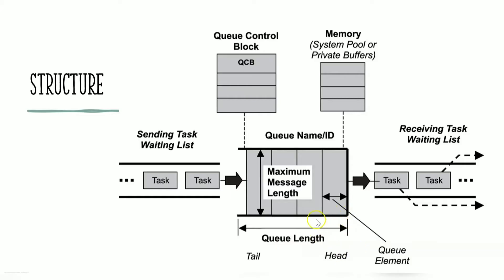There are two ends in the message queue: head and tail. The head is where messages are given to the receiving task — message reading is performed from the head. Messages are put in at the tail end in the normal case, though the reverse is also possible. The message queue also has a name or ID, and a control block where all parameters of the message queue are stored, similar to a process control block.